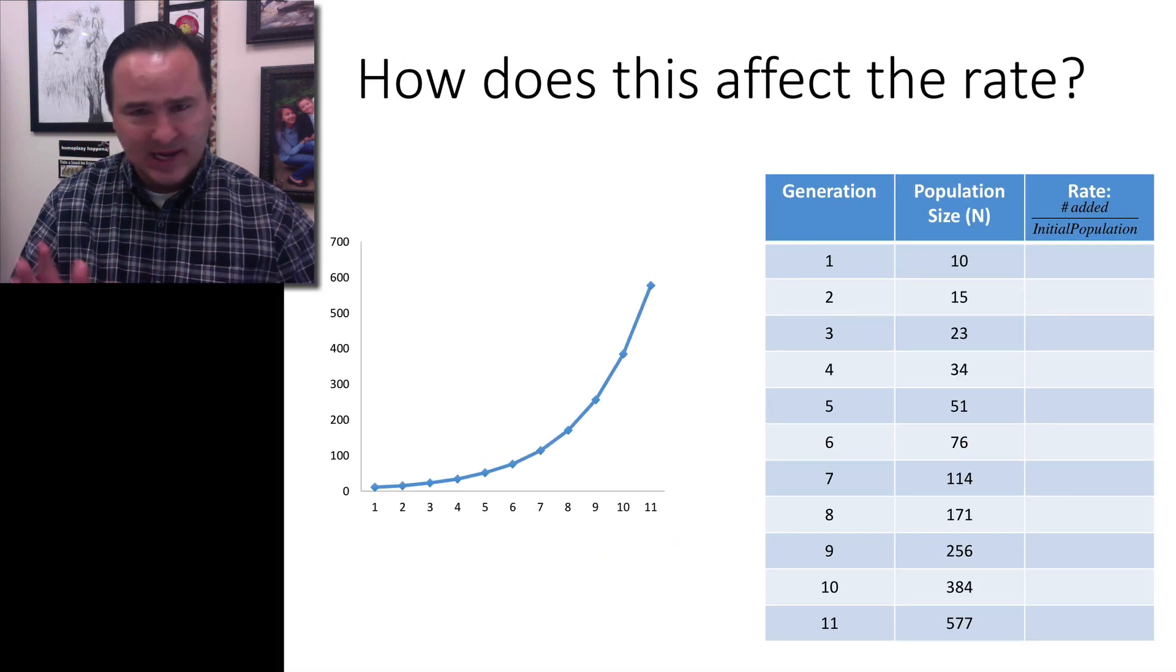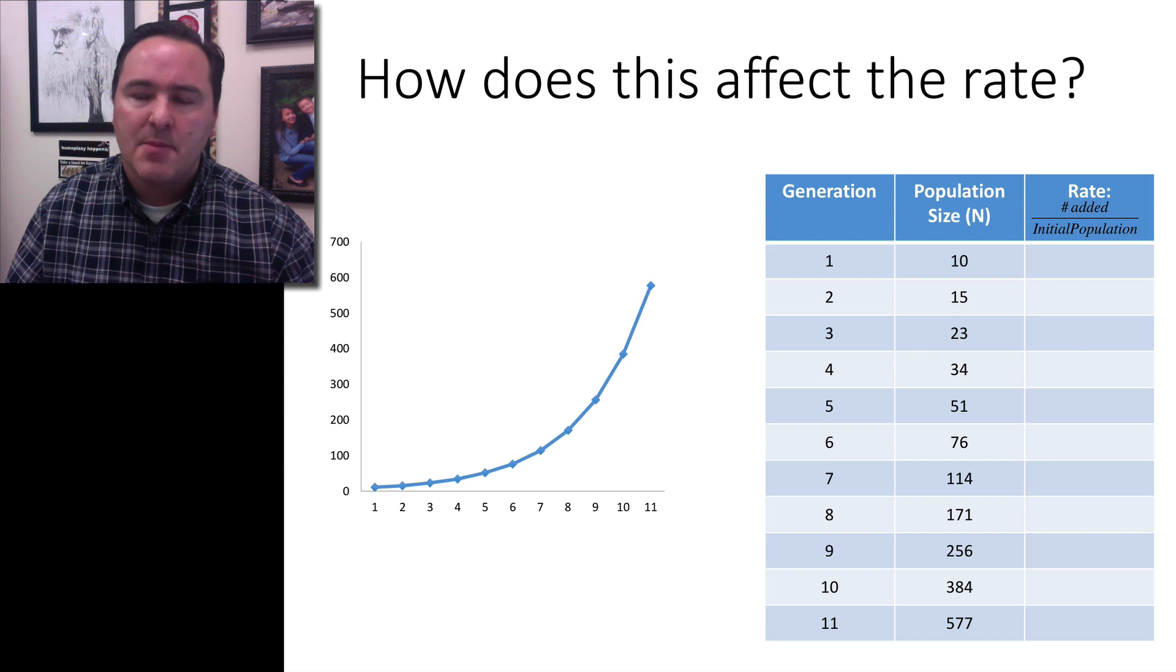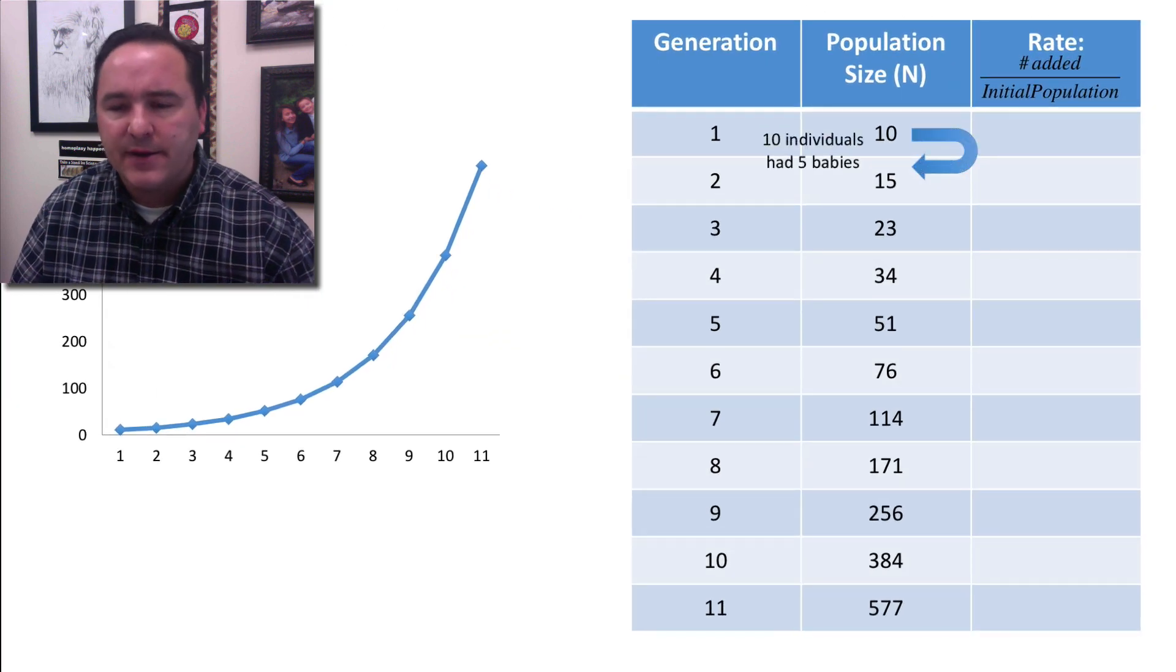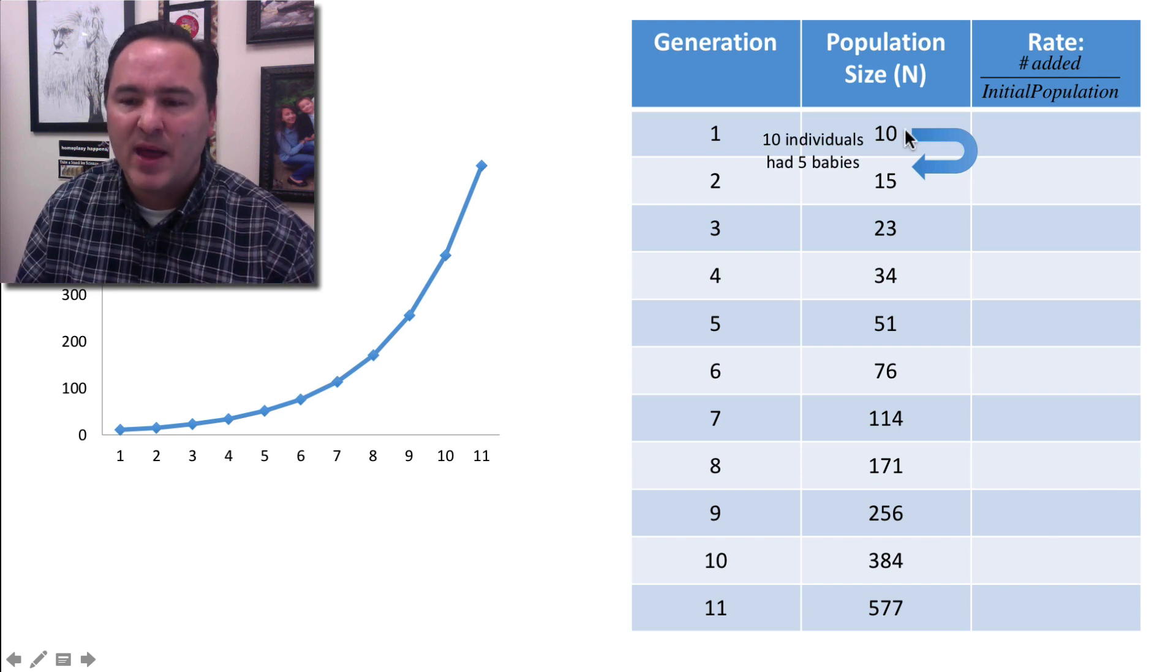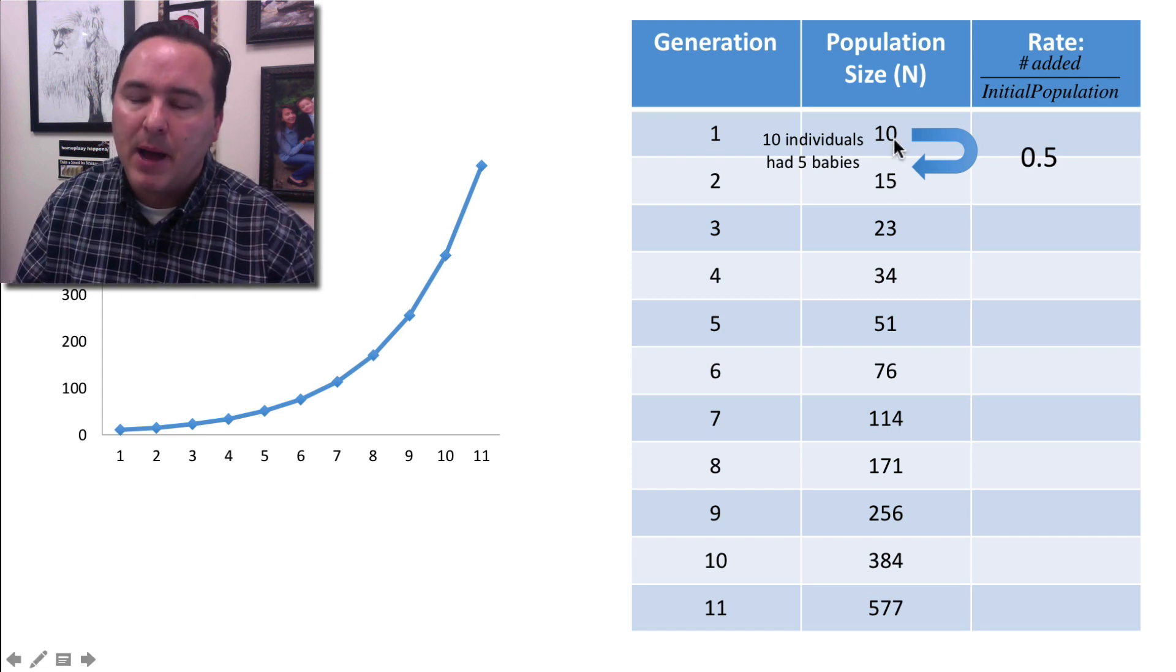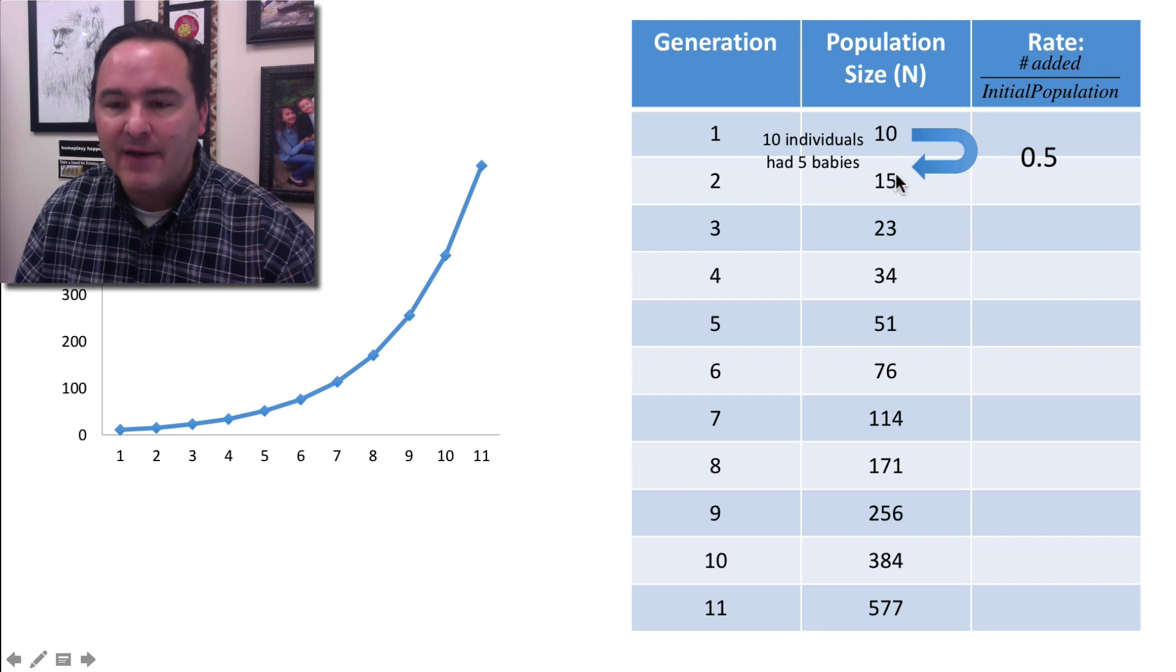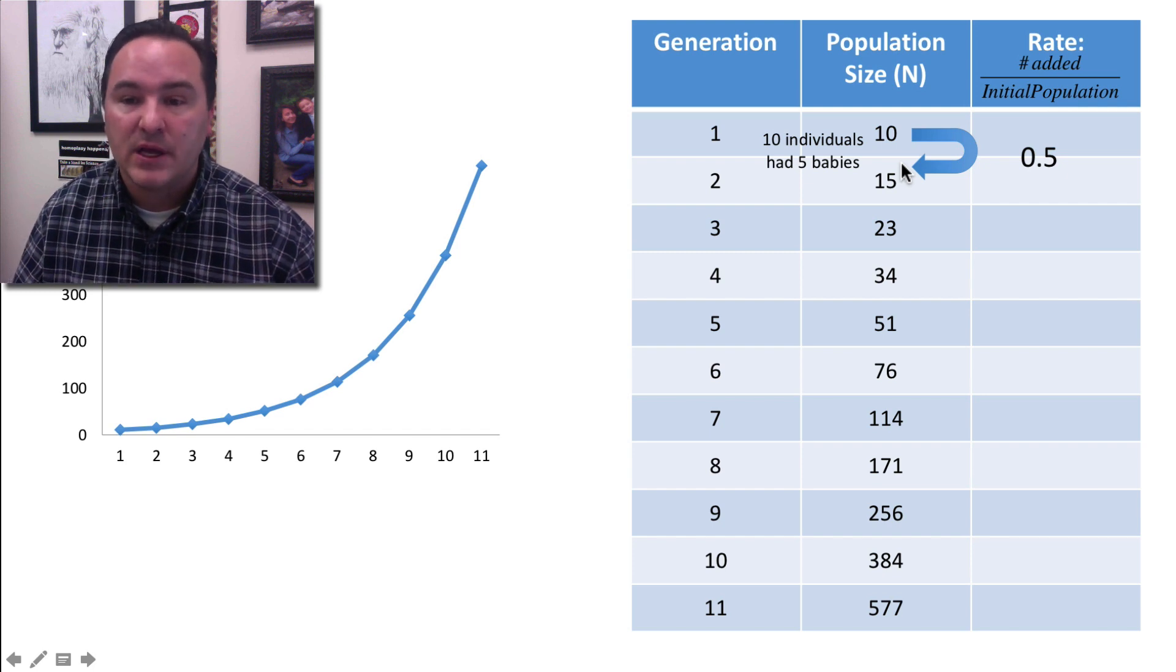How does this type of curve affect the rate, or how does the rate change based on this curve? We need to come up with an idea of how to calculate rate. Let's think about from one generation to the next what's happening. We went from 10 individuals, they had five babies, and we had 15 individuals in the next generation. The rate there would be 0.5, because we increased by half of the total population size. If the total population size was 10, we increased by 5. The rate at which it grew was 0.5 of the initial population.